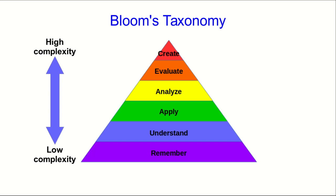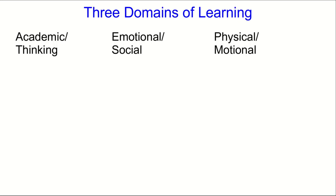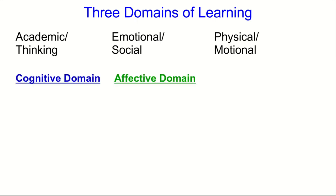Strictly speaking, this is not the whole taxonomy, although as we move on to the other parts, it's no longer really Bloom's taxonomy, because Bloom didn't come up with the whole thing. The taxonomy often gets divided into three domains: one to do with academic and thinking skills, one that's emotional and social, and one that's physical. The technical terms are the cognitive domain, affective domain, and psychomotor domain.